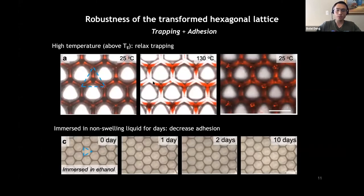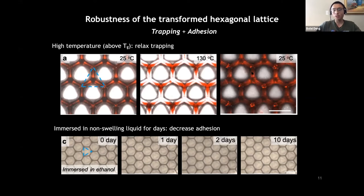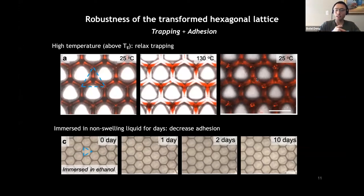This kind of transformation is very robust. If we take the transformed hexagonal lattice and subject it to harsh conditions such as high-temperature heating above Tg, or immersion in liquid for 10 days, it remains a hexagonal lattice. This property is very good for many applications, but it could cause a problem for reversibility. The simple question is: how can we reverse it back to the original triangular lattice? To do that, we need to overcome trapping and adhesion altogether. This can be done using a solvent that swells the structure a lot, so that upon large swelling, the two adjacent walls are peeled off, and the structure transforms back to a triangular lattice. But when this liquid evaporates, it will assemble the structure again, counteracting the disassembly process.